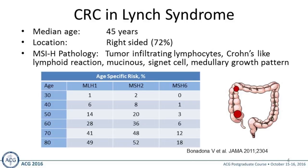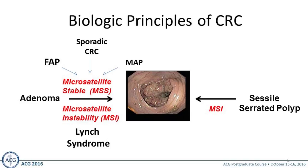Regarding the biologic principles of colorectal cancer, the adenoma is by far the most common precursor to colorectal cancer in the United States. Hereditary cancer syndromes including FAP, MAP, and Lynch syndrome all develop through adenomas, however the molecular pathway differs. Microsatellite stability is the cause of FAP, MAP, and sporadic cancers, but Lynch syndrome develops through the microsatellite instability pathway. Twenty percent of colorectal cancers in the United States develop from sessile serrated polyps, and they are the most common cause of microsatellite unstable tumors.